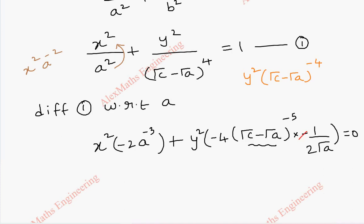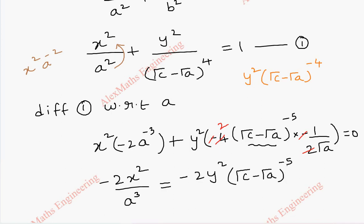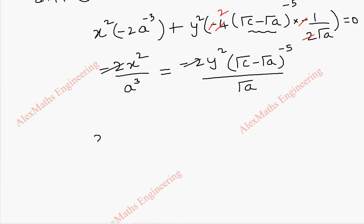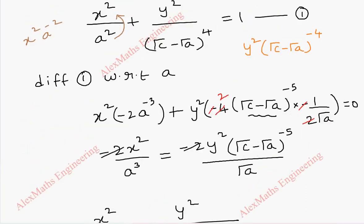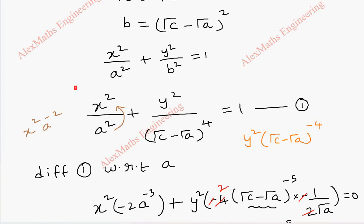We can cancel the minus signs on both sides, and 2 and 4 simplify so the 4 becomes 2. The first term is −2x²/A³ equals −2y² · (√C − √A)⁻⁵ / √A. Canceling −2 on both sides, we write A³ as A² · A, giving x²/(A² · A). On the right, we have y² / [(√C − √A)⁵ · √A]. Canceling √A with A, the remaining factor is √A.